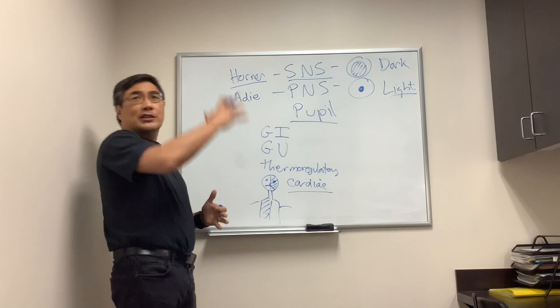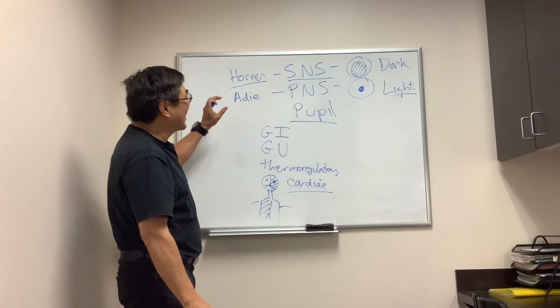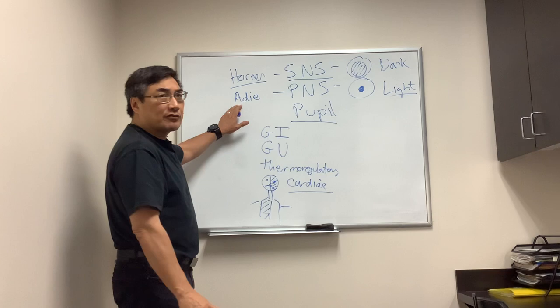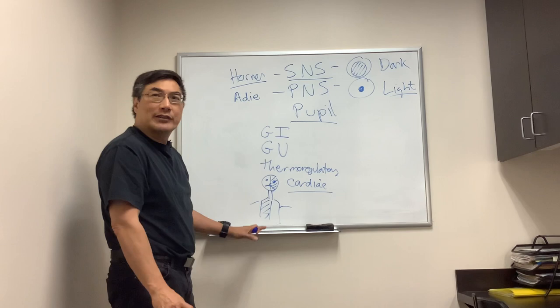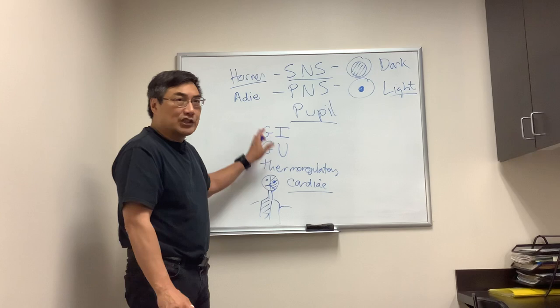The things that we have to ask about before we say it's idiopathic and isolated, Adie's tonic pupil, or idiopathic and isolated Horner's, is make sure there's no systemic involvement. If you have decreased reflexes, we call that Adie's Holmes. If it's involving half your face or body, we call that Harlequin. And if it's a dysautonomia that's idiopathic, that involves other sympathetic or parasympathetic systems, but especially thermoregulatory sweating, cardiac, GI, GU, that thing we call the ROS.